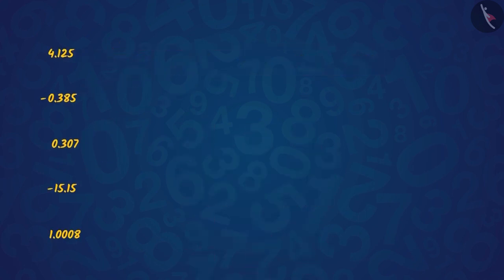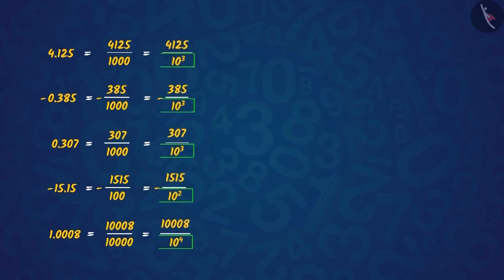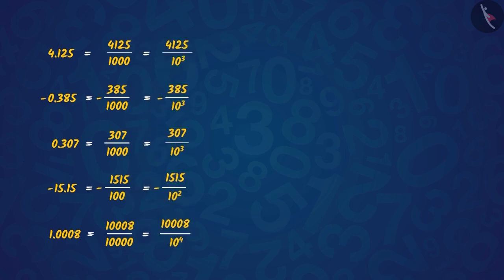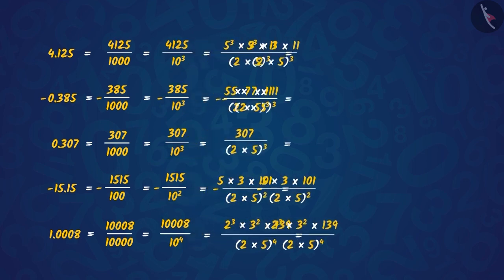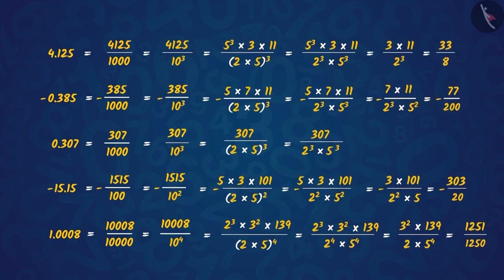You can see that all these can be expressed as rational numbers whose denominator is a power of 10. Now, if we write the numerator and denominator in the form of their prime factors, then we cancel out their common factors.